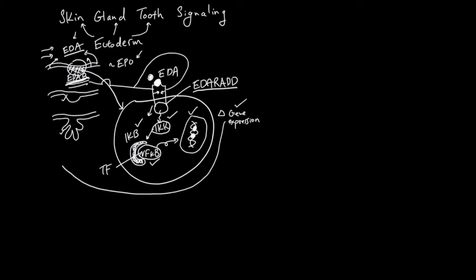NF-kappa-B is going to go to the nucleus and change expression of the cell. The cell is going to change its structure and function and begin to develop into structures like full skin, gland, and tooth. This EDA signaling is not necessary to maintain skin, gland, and tooth, but it's just needed to trigger this differentiation.